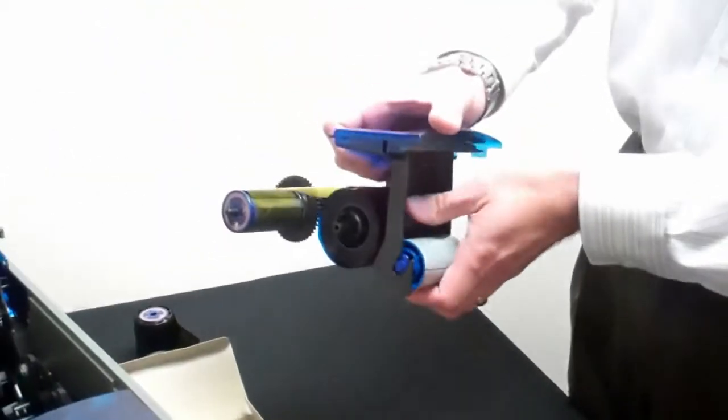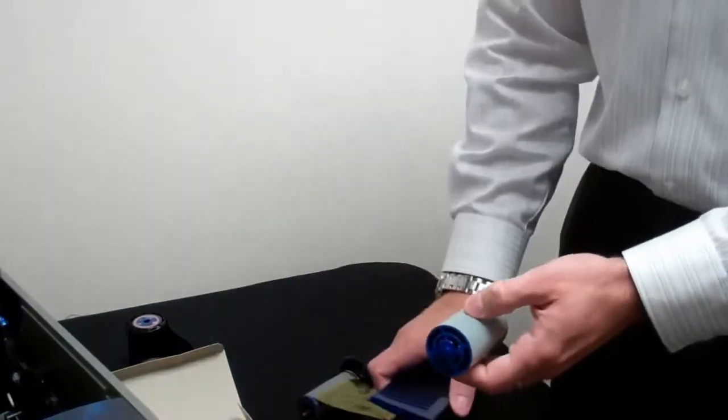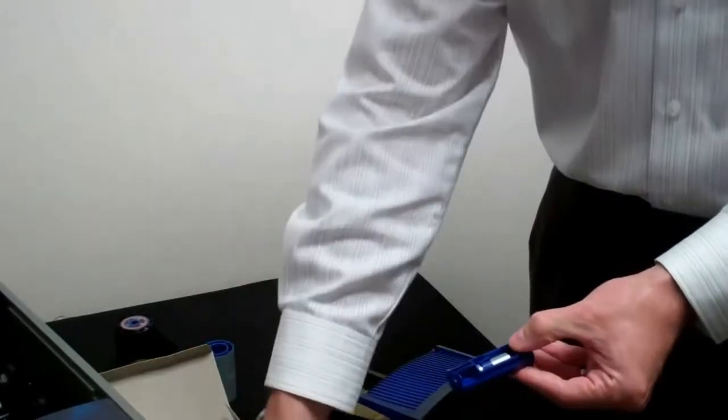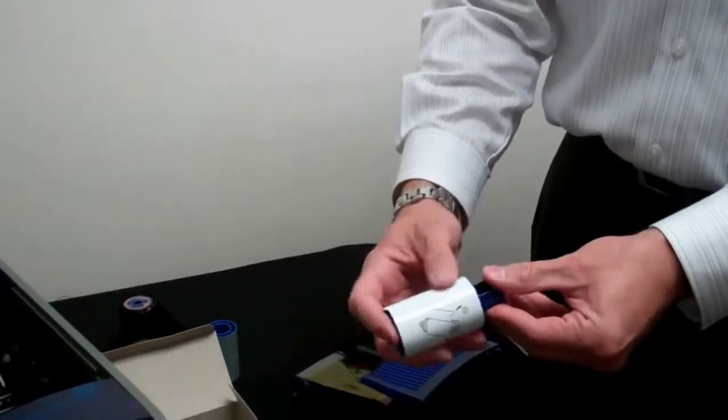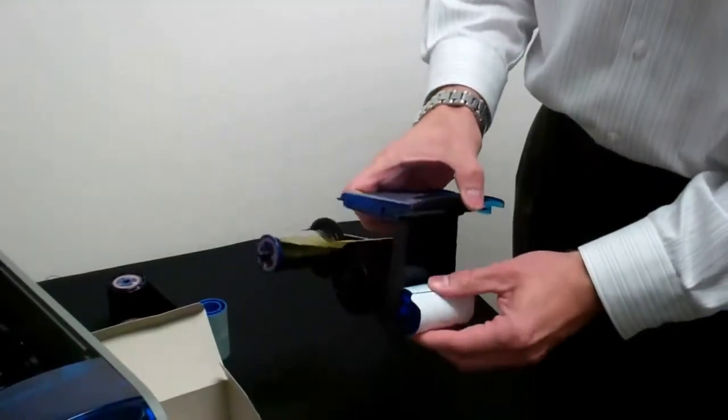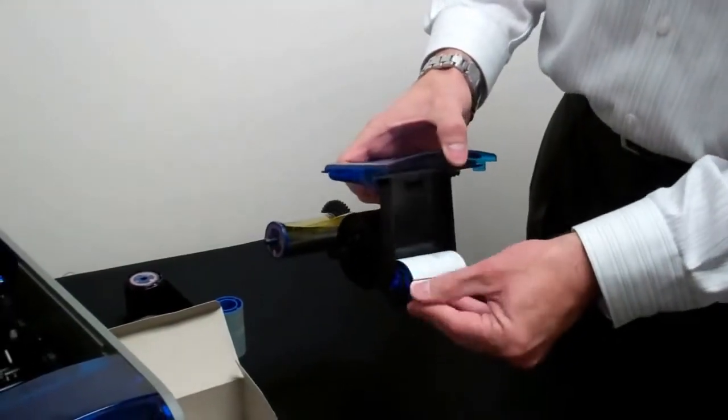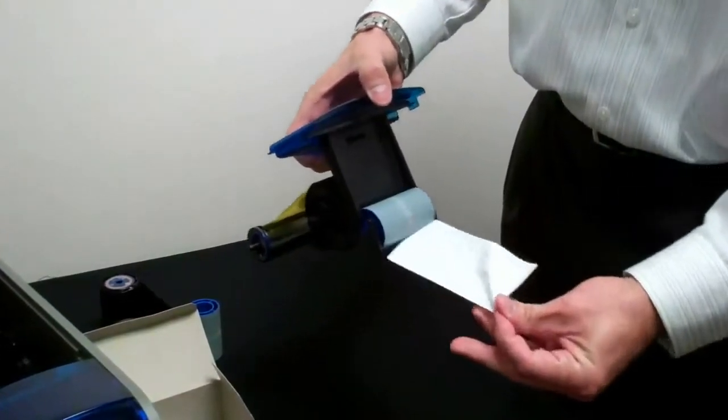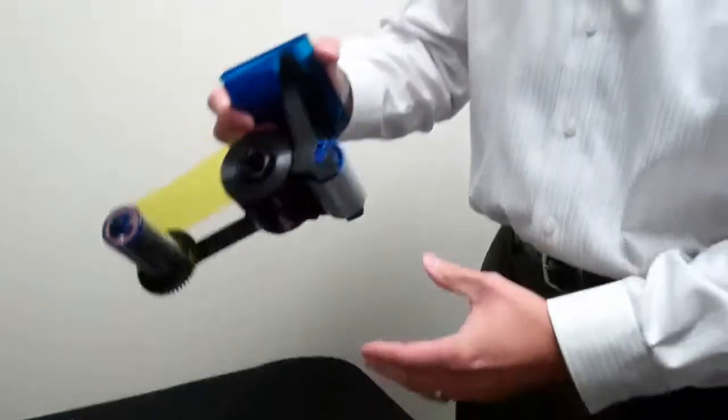At the back we've got the cleaning roller, snap that off, remove the spindle, place the new one on, snap it into place, remove the paper, and now you are good to go.